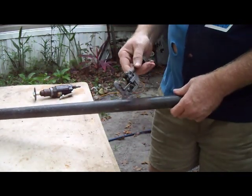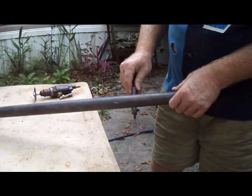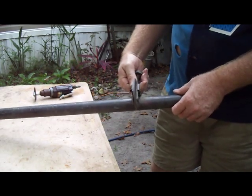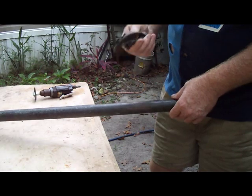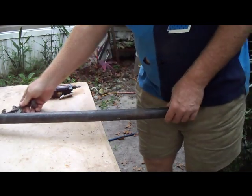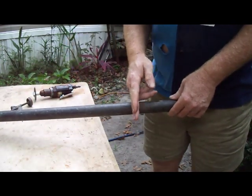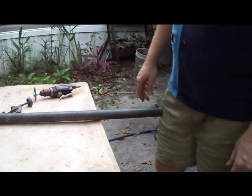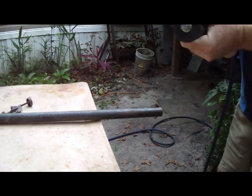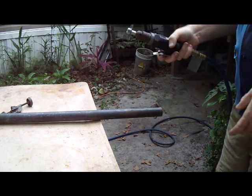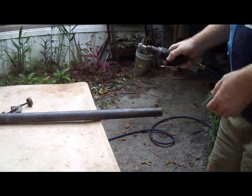Normally I would cut it with this pipe cutter here. As you can see, it's too small and I don't have a bigger pipe cutter. You could also hacksaw this, but I'm not going to do that either. I'm going to use this carbide cutter here to cut this pipe.